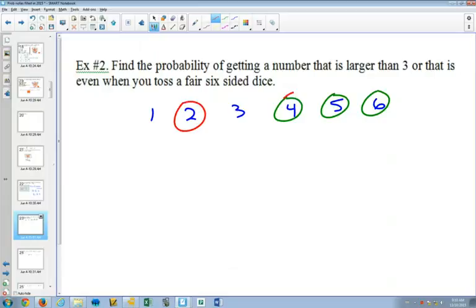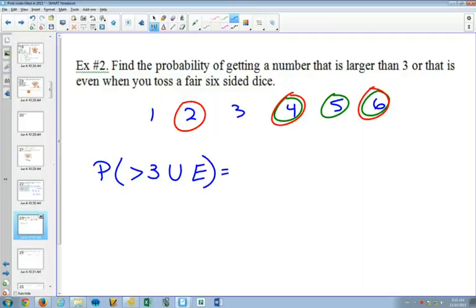Evens would include 2, 4, and 6. So if you could get one or the other, your probability is going to be probability of greater than 3 or even will be 4 out of 6.